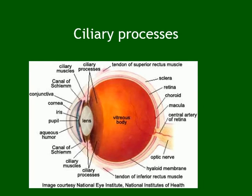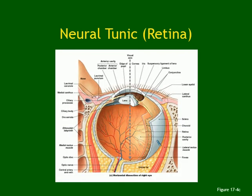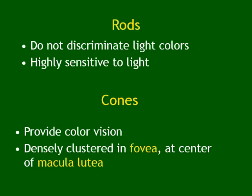The retina contains photoreceptors of two types: rods and cones. Rods are highly sensitive to light and are used for night vision — you see in black and white. Cones are for day vision and color. Remember: rods = night, black and white; cones = color, day.